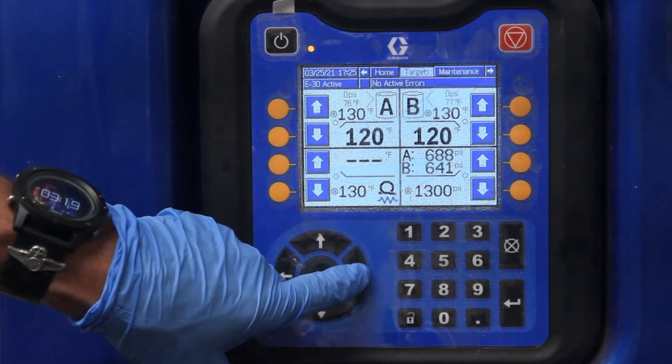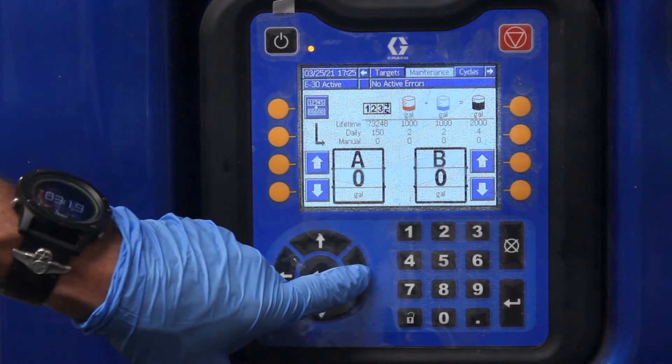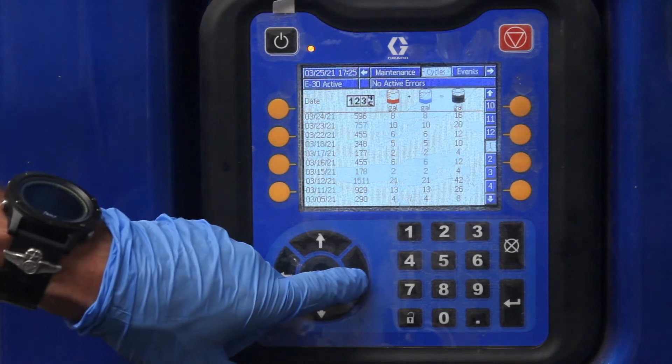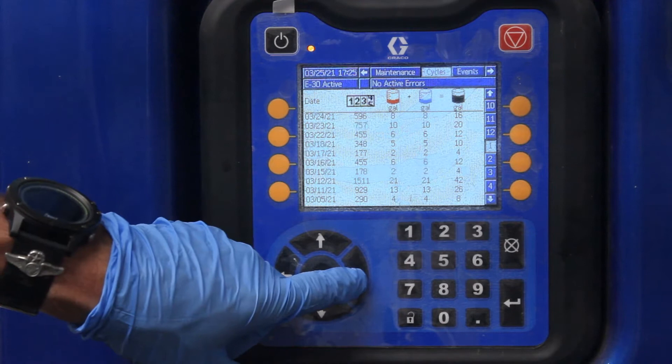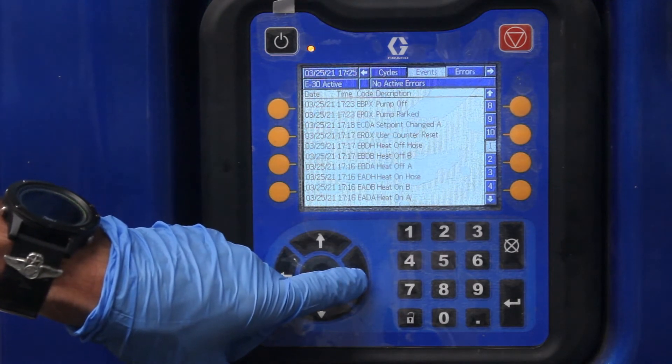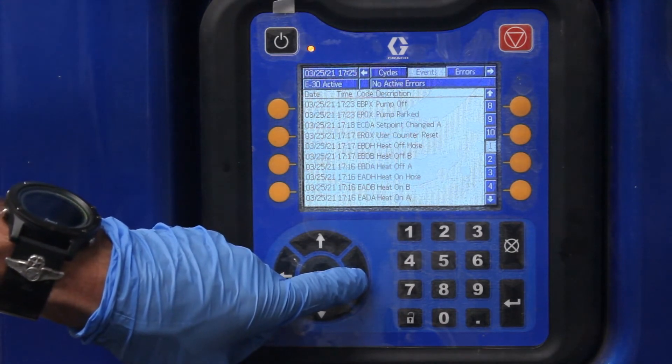To change screens, you push the right button. As you're pushing it, it changes. Gallons, goes into usage, tells you what you did, either turn the hose on or off.